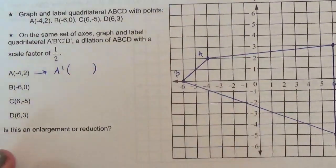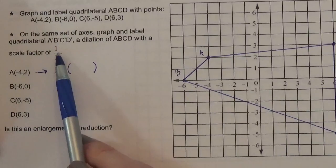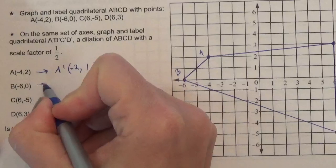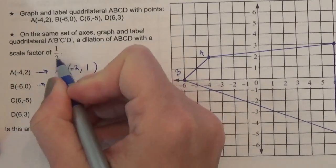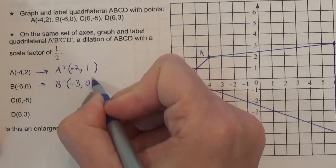A prime, I figure out what the points are going to be. So we're taking a half of each of these. What's a half of negative 4? Negative 2. What's half of 2? 1. What's half of negative 6? Negative 3. Half times 0? 0.